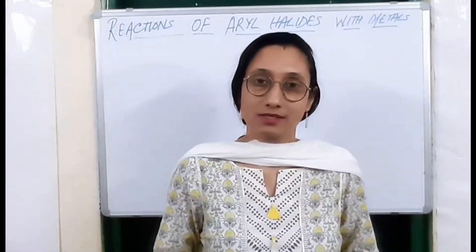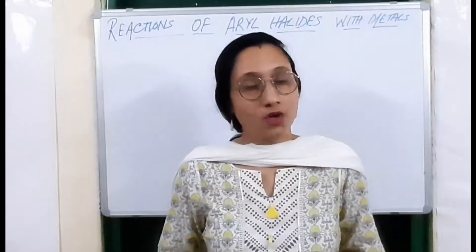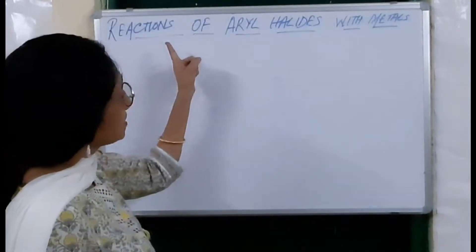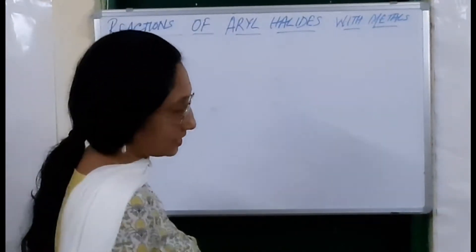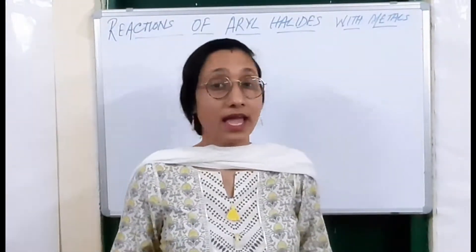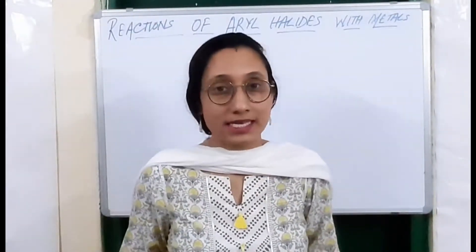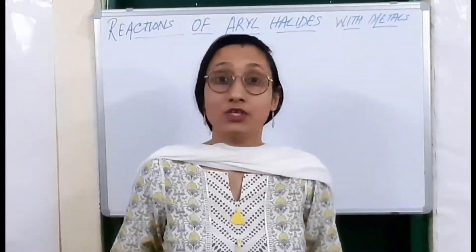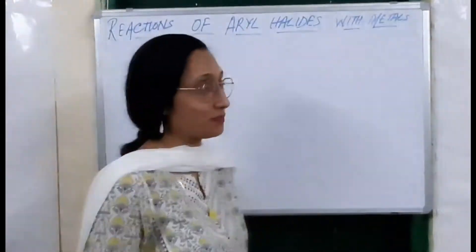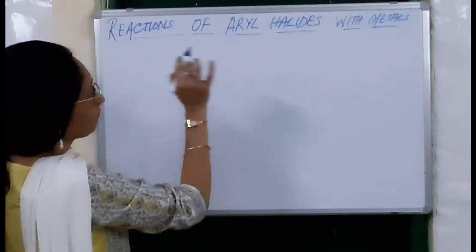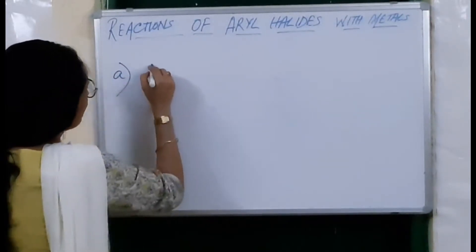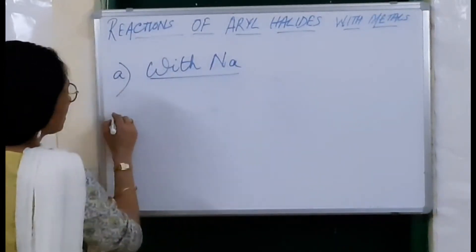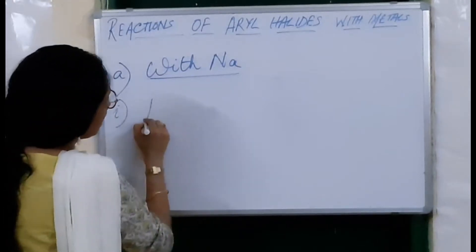Good morning students. We will continue with the reactions of aryl halides. Now we will study the reactions of aryl halides with metals. Aryl halides or halo arenes like chlorobenzene and bromobenzene react with several metals like copper, sodium, and magnesium. We will first see the reaction of aryl halides with metallic sodium.